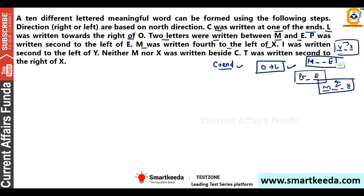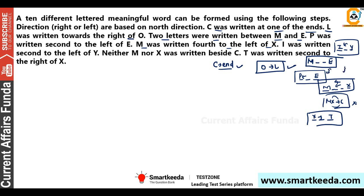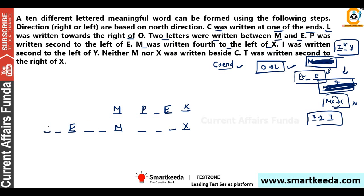M is written fourth to the left of X. I is written second to the left of Y. The second to the right of X is T. Start with M and X: place X, count back four for M. Then M and E have two gaps between them, giving two possible positions for E. P is second to the left of E. Counting positions 1 through 10 gives a 10-seat arrangement.